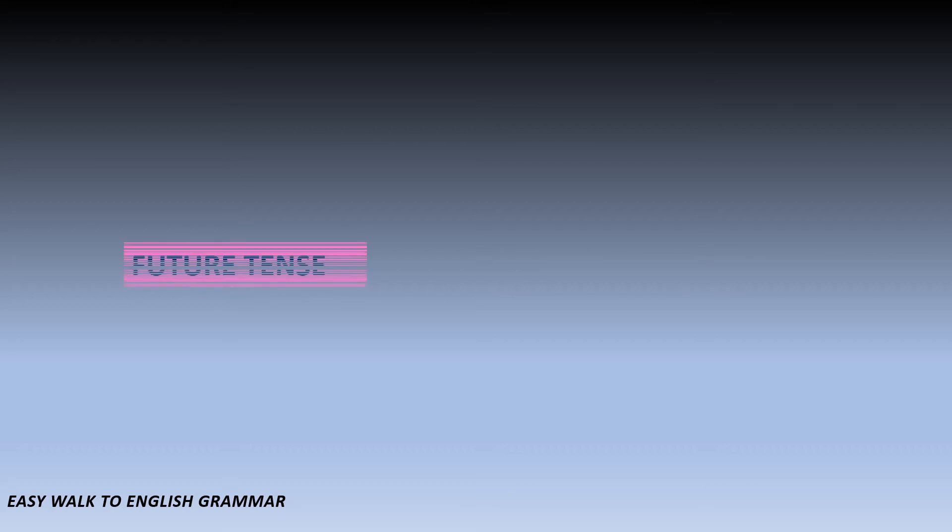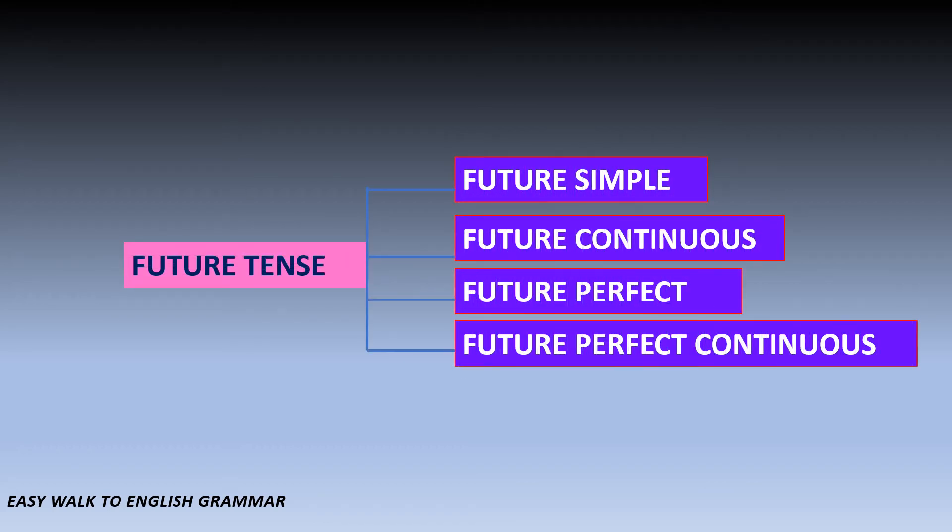Likewise, future tense is also classified into four: future simple, future continuous, future perfect, future perfect continuous. There are twelve divisions. The three tenses are subdivided into twelve more subdivisions. We need to know the names of all those things. Most of us are familiar with the terms, and in our coming videos, we will be going for them in detail.